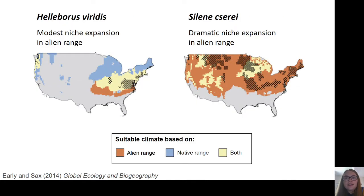An example of this is shown by Erle and Sachs, who compared climatic conditions occupied by plants in their native and alien ranges — specifically for plant species that are native to Europe and have been introduced to the USA. On these maps, the black areas are the observed alien range for each species, and the colours indicate climatically suitable areas based on their alien range in orange and based on their native range in blue, with yellow showing the overlap. For the species on the left, areas predicted suitable based on its alien range mostly fall within conditions considered suitable based on its native range, but there's still been a modest amount of niche expansion into the orange area.